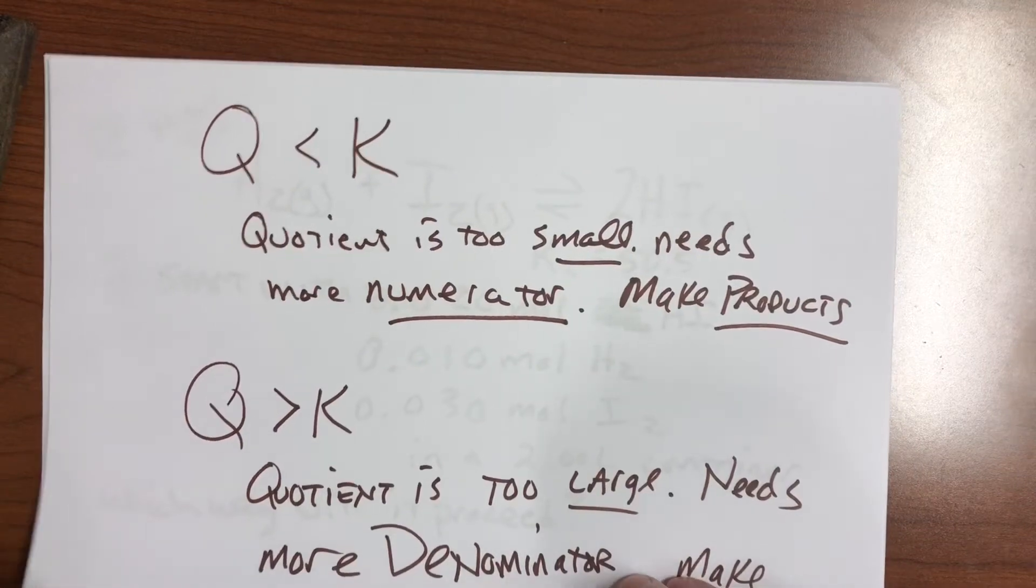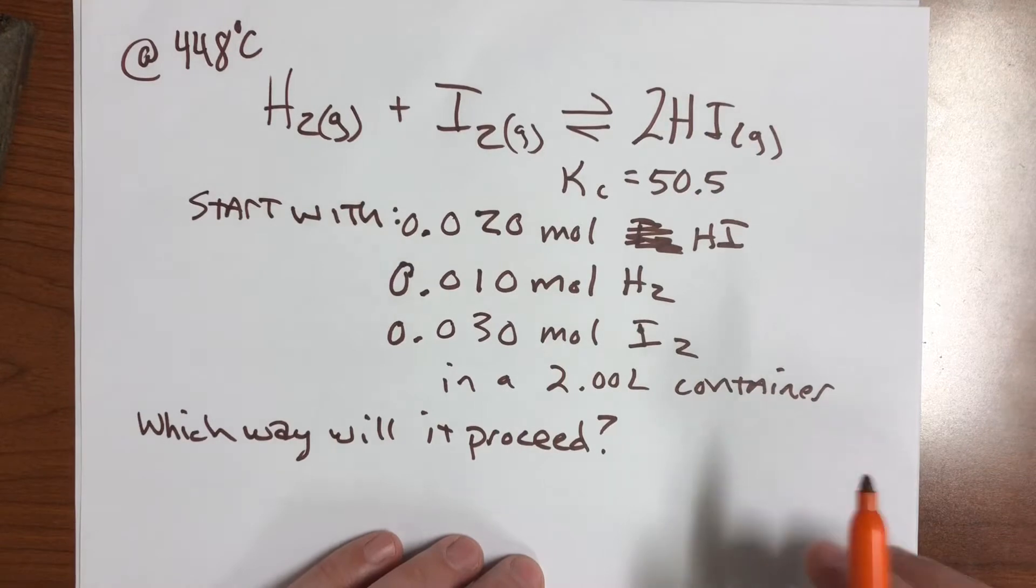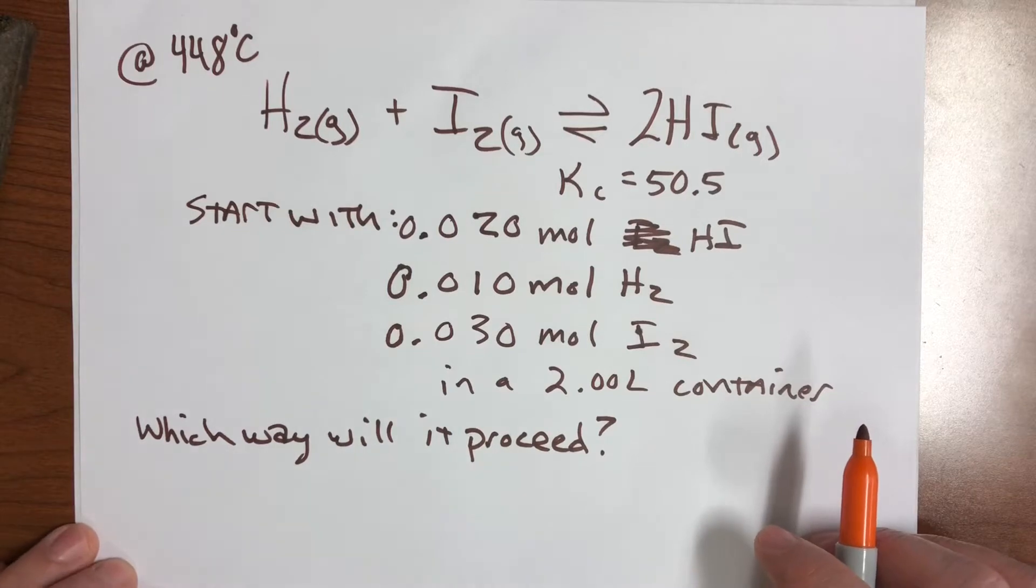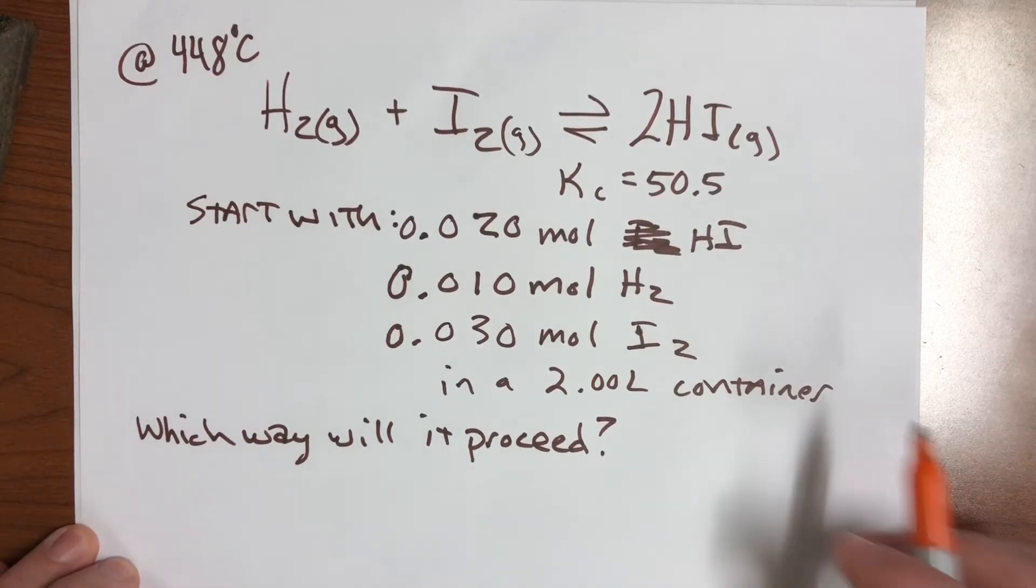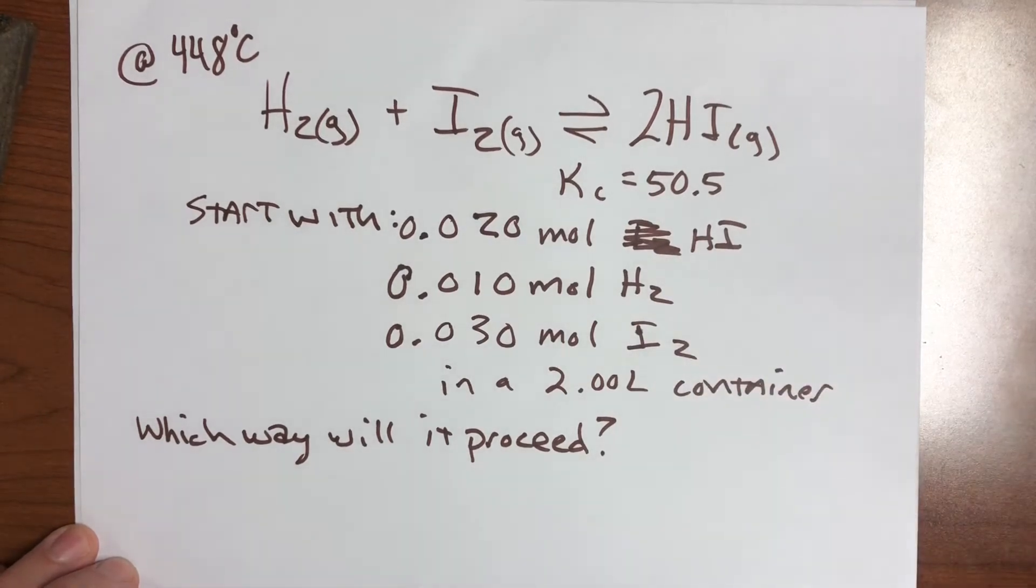So here is a reaction. This is a reaction that's at 448 degrees. The reaction between hydrogen and iodine is a reversible reaction producing hydrogen iodide gas, and we have a Kc of 50.5.